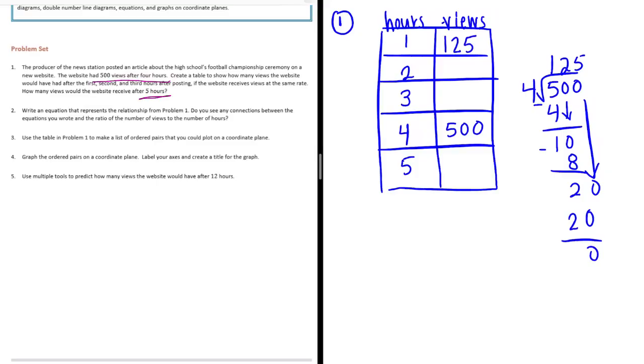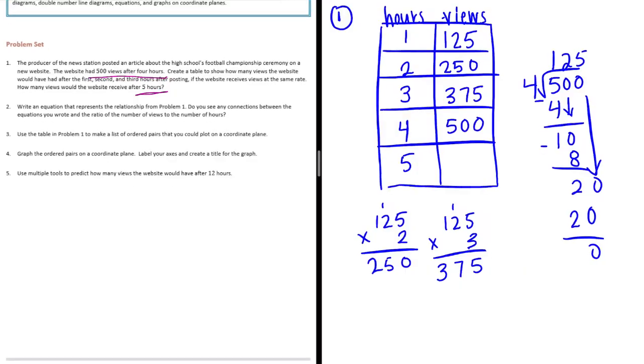So if there's 125 views in one hour, we can figure out two hours by doing 125 times two will get us 250. If we want to do three hours, we can do 125 times three. Five times three is 15, three times two is six plus one is seven, three times one is three, so 375 views. 125 times five would get us, five times five is 25, five times two is 10 plus two is 12 carry the one, five times one is five plus one is six, so 625 views in five hours.